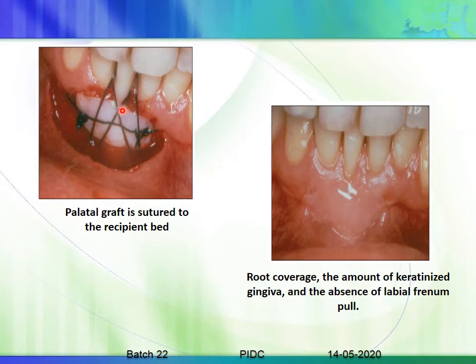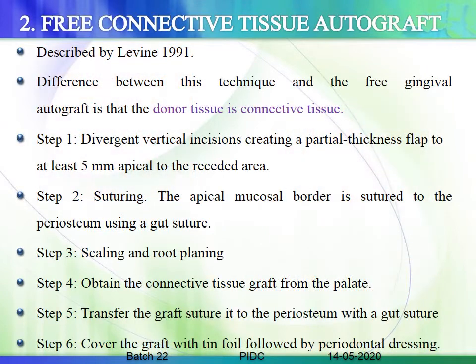The graft is placed in the gingival recession area and sutured to the periosteum underneath, by the sides, and with a sling suture around the teeth. After healing, there is adequate root coverage, more keratinized gingiva is achieved, and the labial pull is relieved. For the free gingival graft: create vertical incisions forming a partial thickness flap at least 5 mm apical to the receded area, suture the apical mucosal border to the periosteum using gut suture, scale and root plane, then obtain a connective tissue graft from the palate, transfer it to the periosteum with gut suture, cover with tin foil and a periodontal dressing.